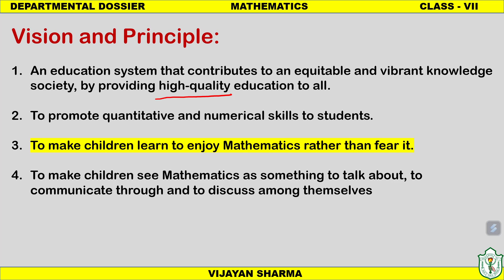We want to promote quantitative and numerical skills to students — the quantitative aptitude and numerical skills required in the 21st century digital era. The third and most important principle is to make children learn to enjoy mathematics rather than fear it, because most students fear the subject and get low marks. We want to make children see mathematics as something to talk about, communicate through, and discuss among themselves, because the more they discuss, the more interesting it becomes.